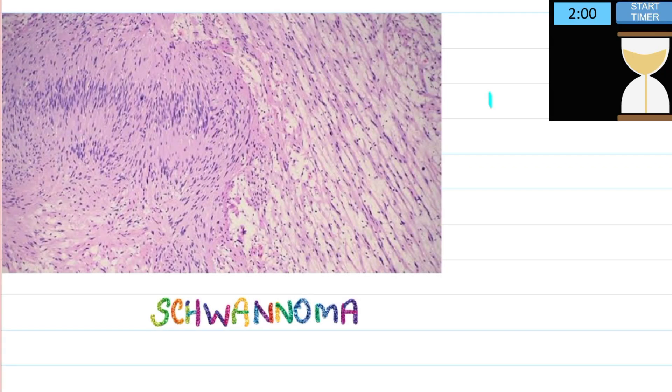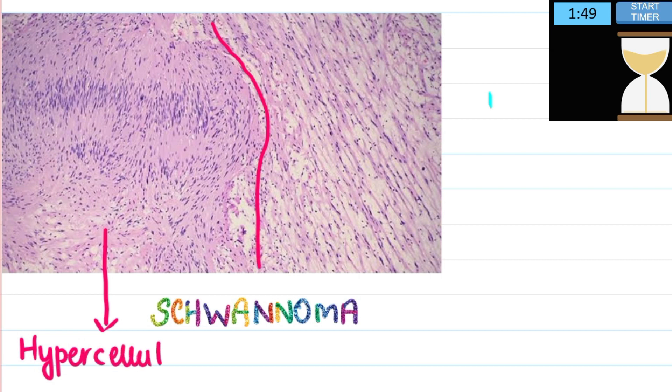The image is that of a tumor known as schwannoma and this image has two distinct areas. On the left we have lots of cells, so that is the hypercellular area, and on the right we have less cells, a loose tissue that is a hypocellular area.